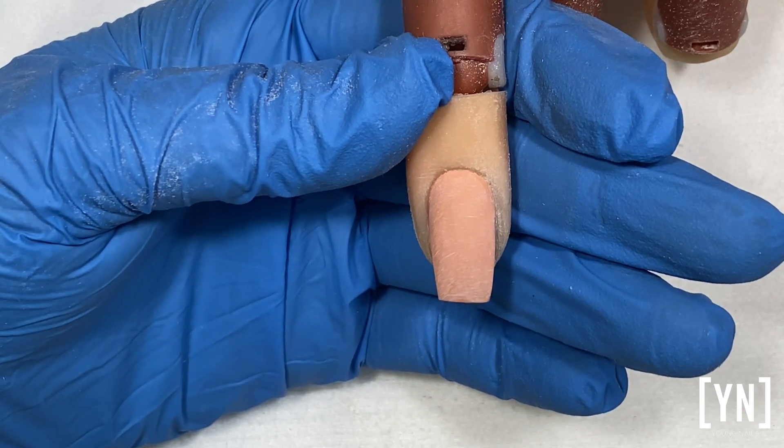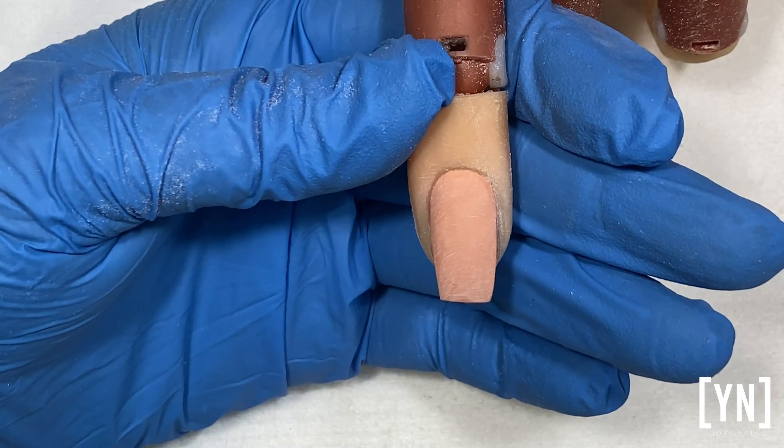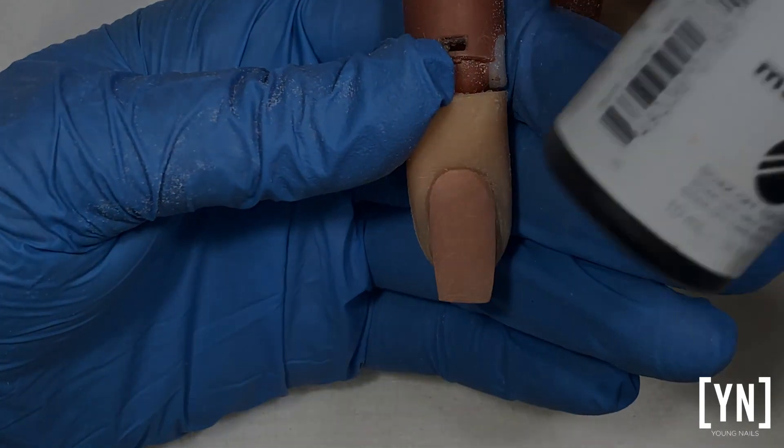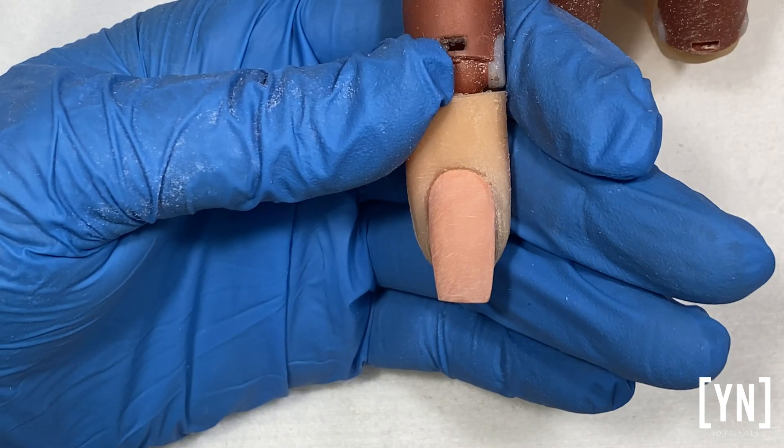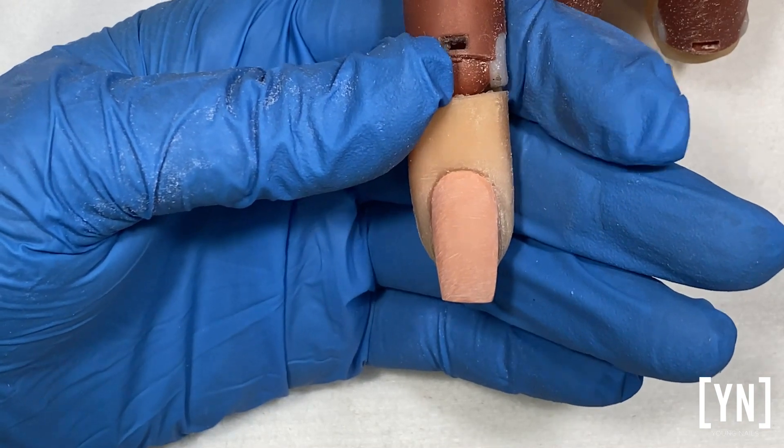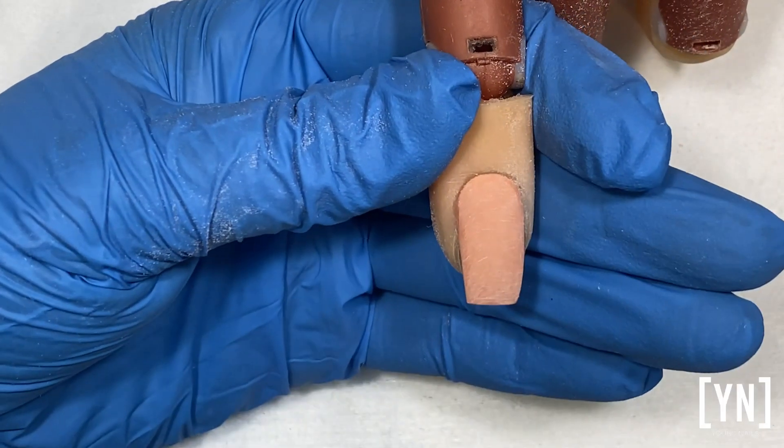And the quality of the product that you're working with. So today we are covering manicure. Manicure is a soft gel, so it means it's a color concept. Now I already built a nail with our Synergy gel.